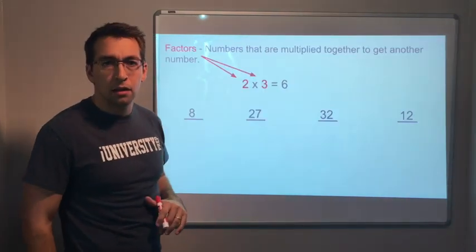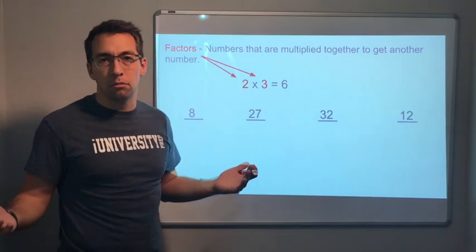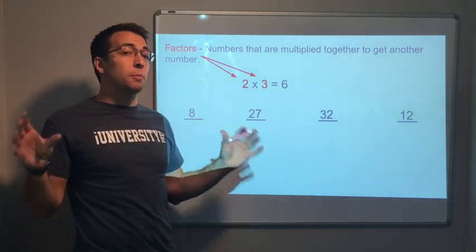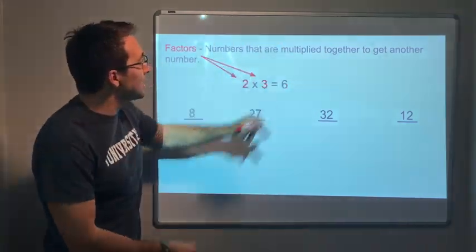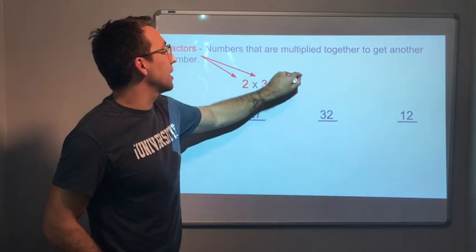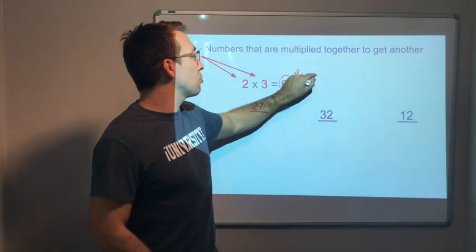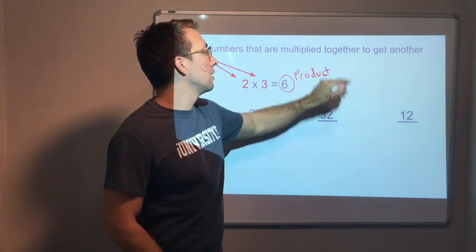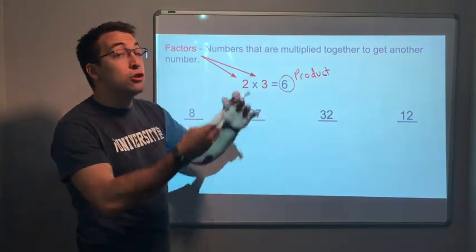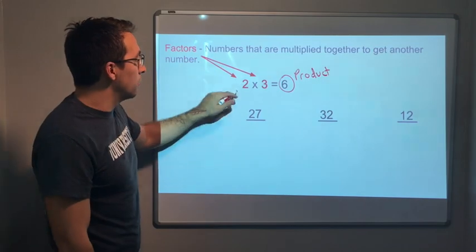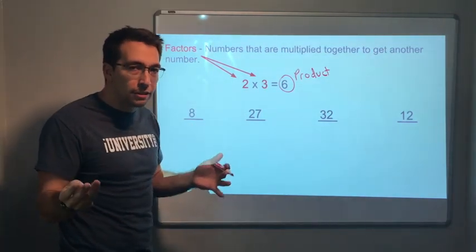Well let's find out. So factors are numbers that are multiplied together to get another number. Any two numbers that you multiply together, those are factors and they're going to come up with the answer to a multiplication problem. The answer to a multiplication problem is the product. Two factors multiplied together produce a product.